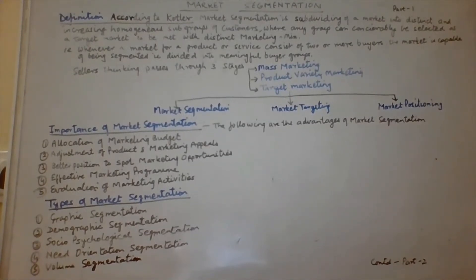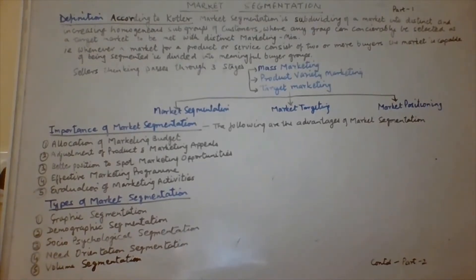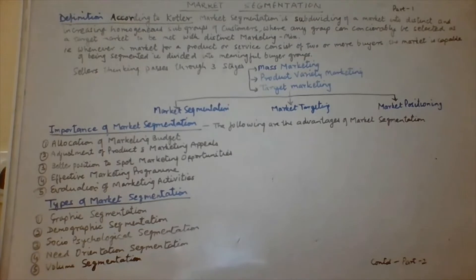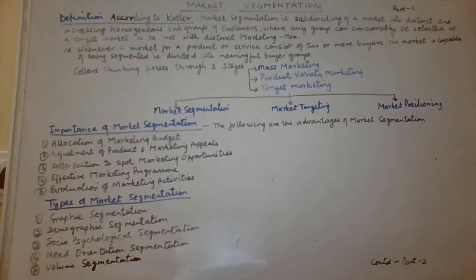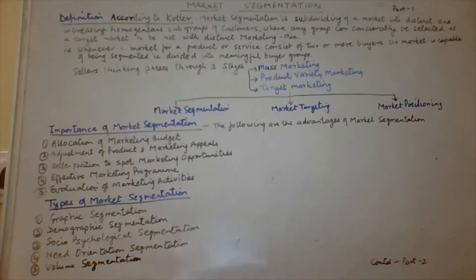In mass marketing, the seller produces a single product in masses — the total number of people with no major distinction among them — and promotes and distributes products to all buyers. The marketing mix therefore remains the same for all customers. There is no need for a different combination of the marketing mix; one strategy using the 4Ps remains for the entire market.